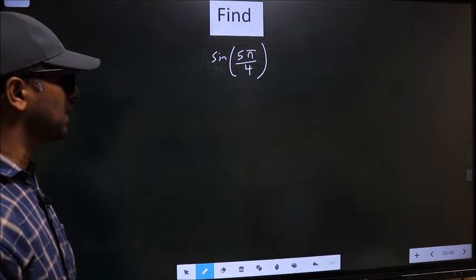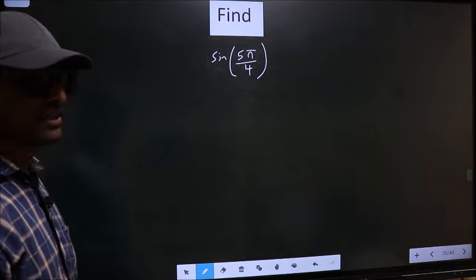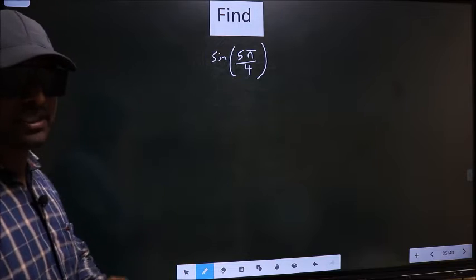Find sin 5 pi by 4. To find this, we should follow this method.